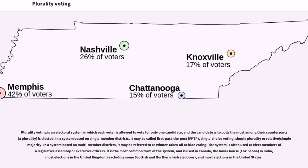Plurality voting is an electoral system in which each voter is allowed to vote for only one candidate, and the candidate who polls the most among their counterparts — a plurality — is elected. In a system based on single-member districts, it may be called first-past-the-post (FPTP), single-choice voting, simple plurality, or relative/simple majority. In a system based on multi-member districts, it may be referred to as winner-takes-all or block voting.